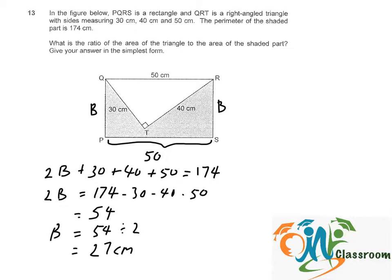Now we want to find the area of the triangle and the area of the shaded part. To find the area of the triangle, it will be half times base which is 30, times the perpendicular height which is 40. That will give us 600 cm².